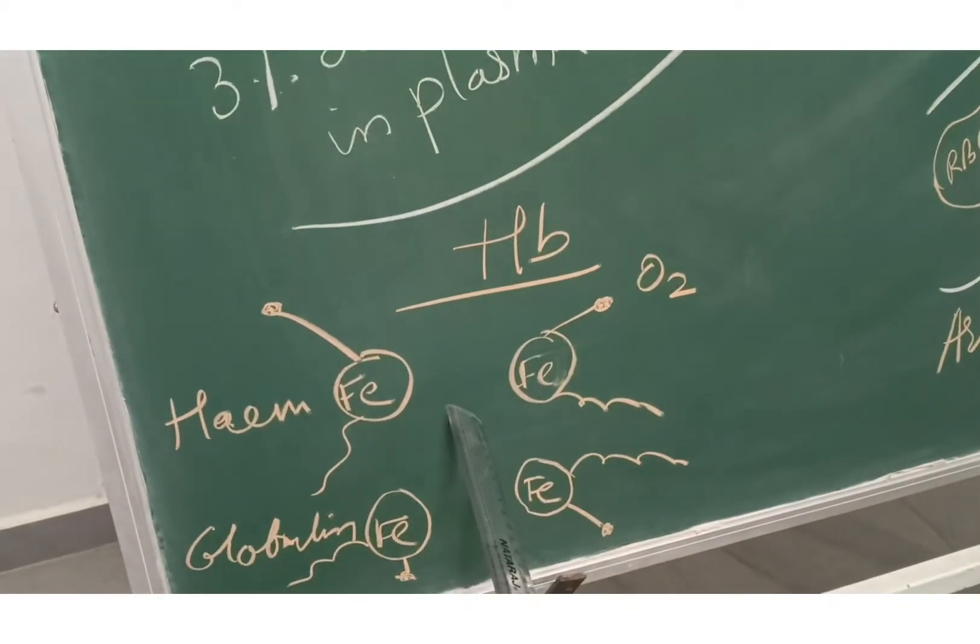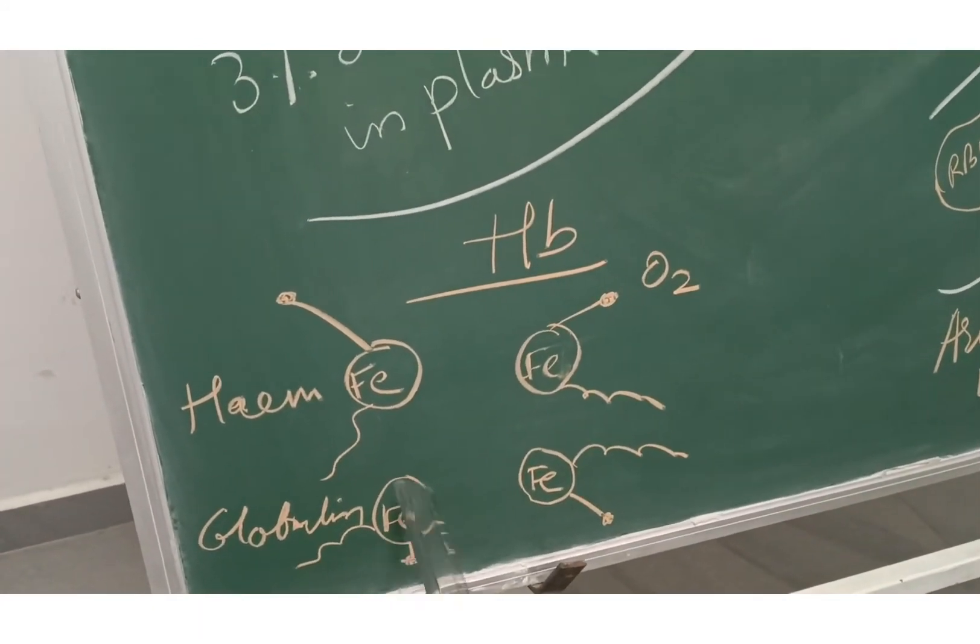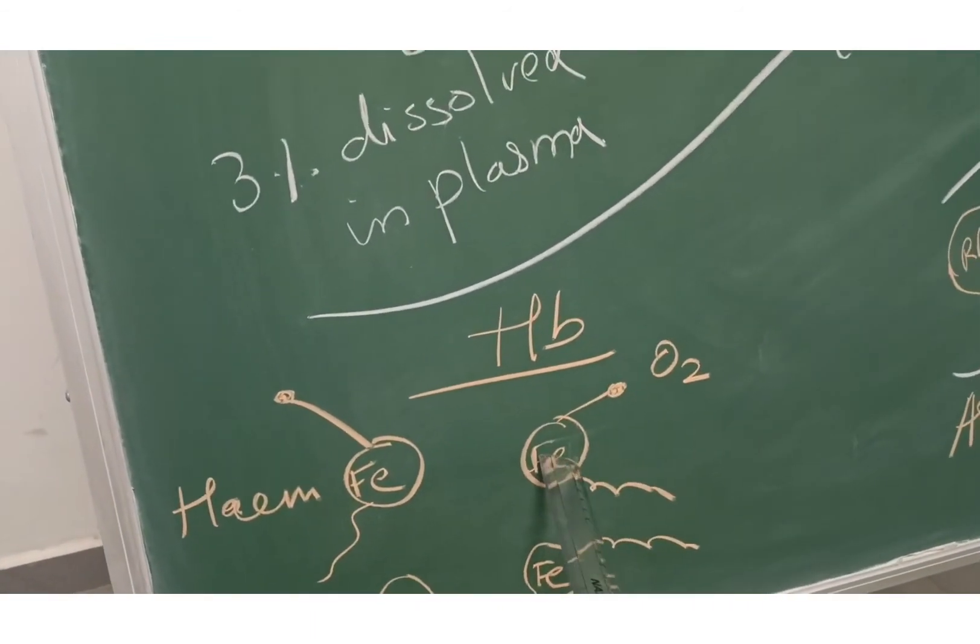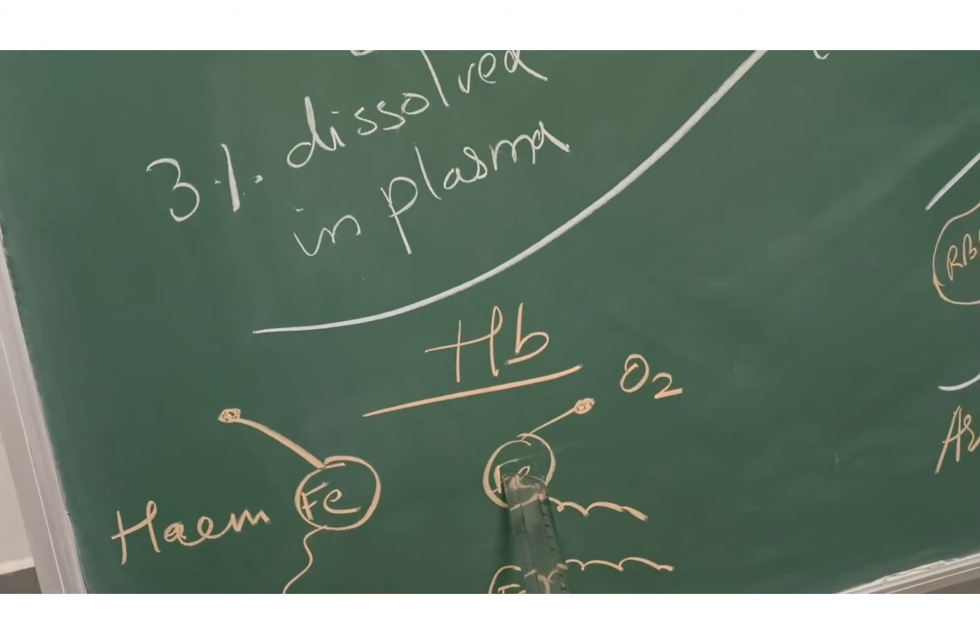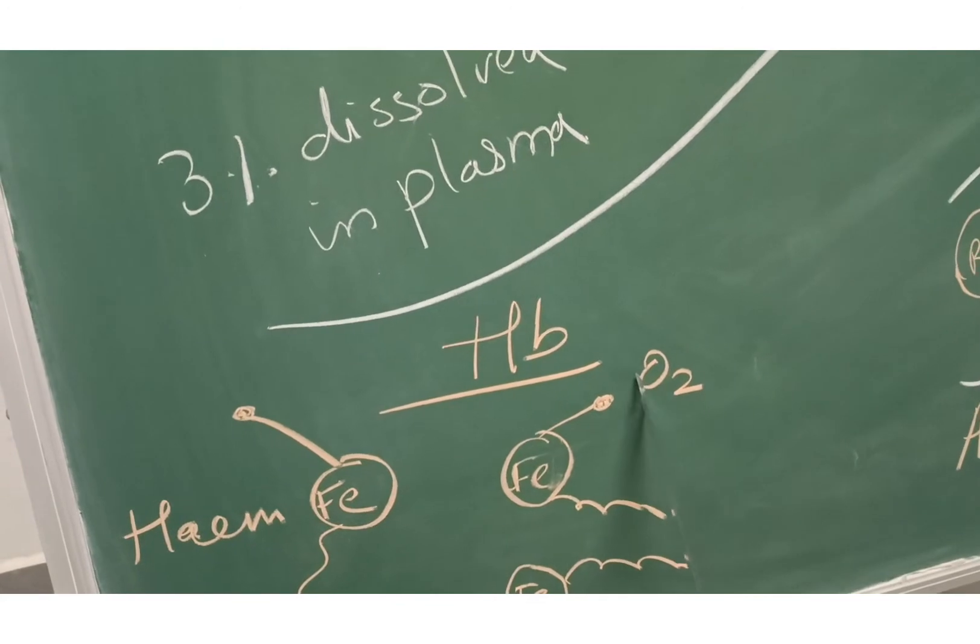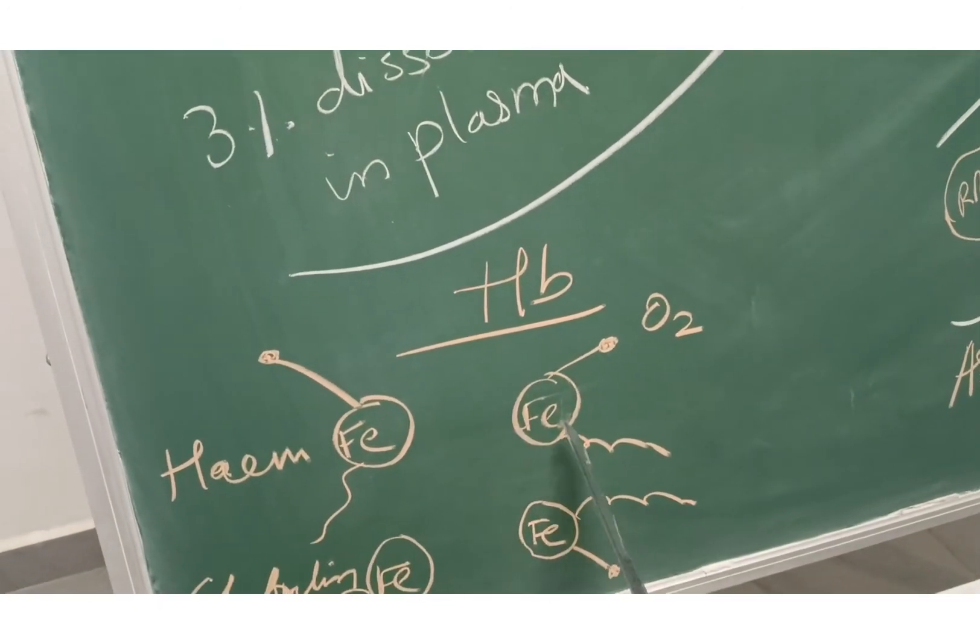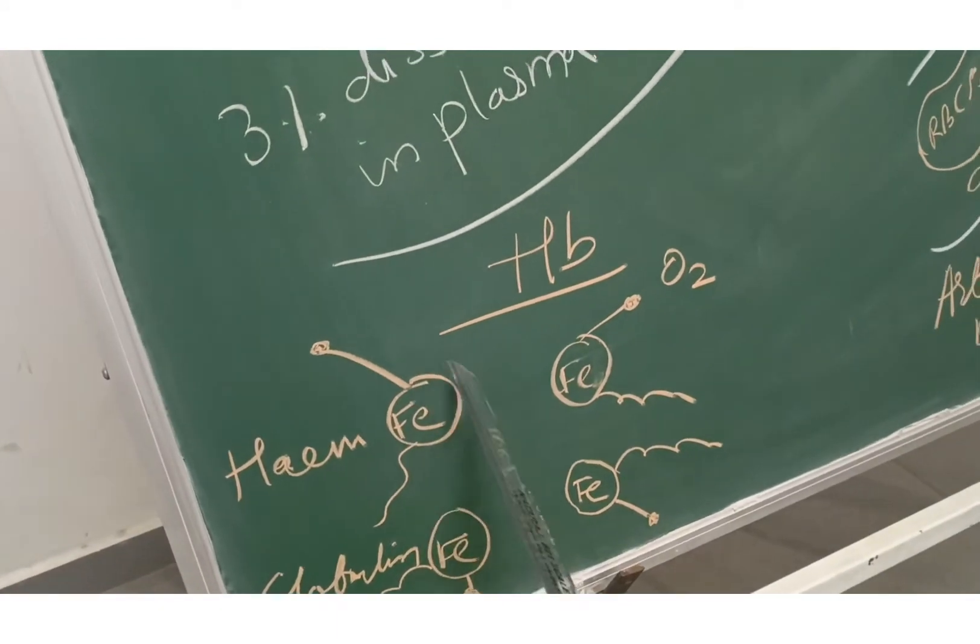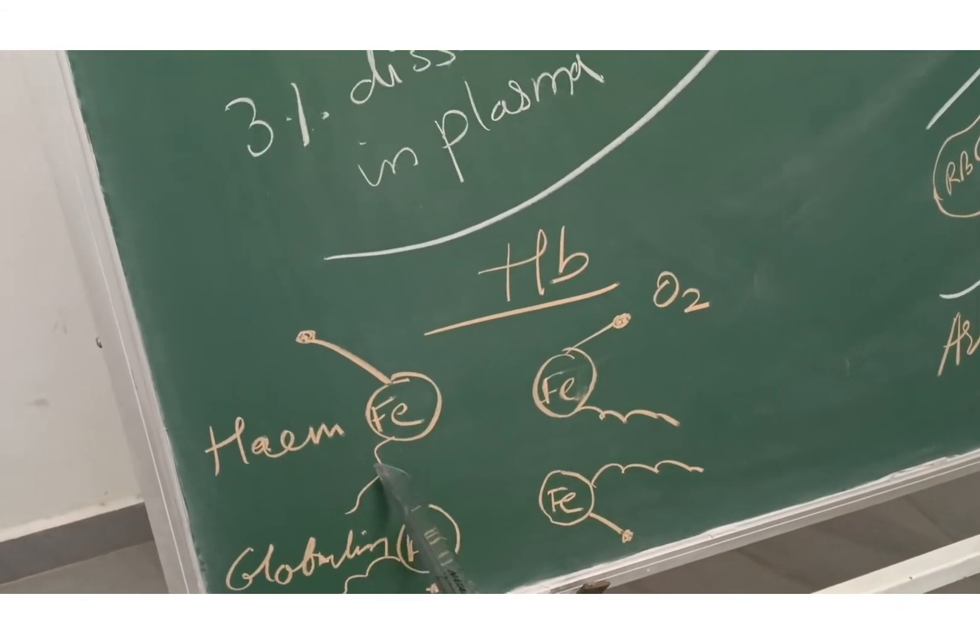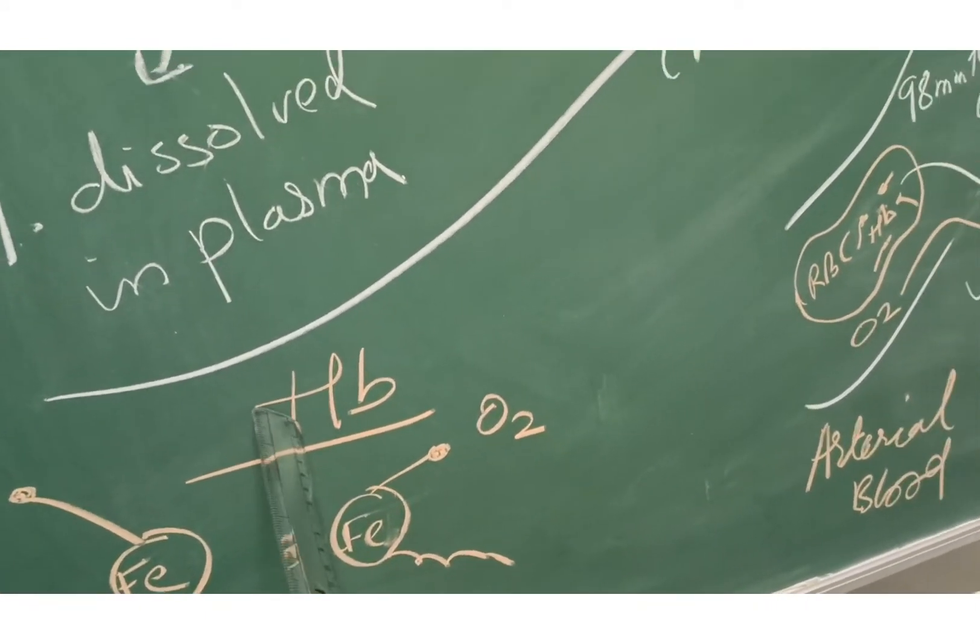Let's see what hemoglobin has. Hemoglobin has four atoms of heme and globulin. You can see here, this is the iron atom. Oxygen binds to this iron atom. As soon as one oxygen binds to the iron, the affinity for oxygen for the other iron atoms increases, and all the iron atoms bind with oxygen. As a result, oxyhemoglobin is formed.